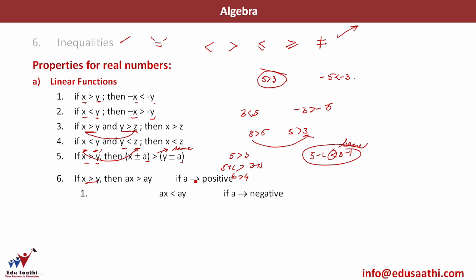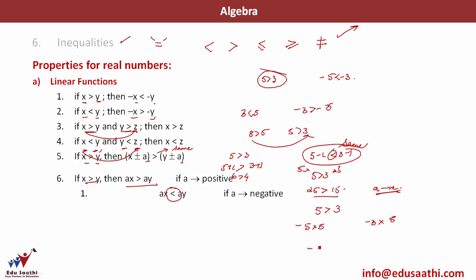If x is greater than y, then multiplying with a positive constant a on both sides, the sign of the inequality remains the same. So if 5 is greater than 3 and I multiply by 5 on both sides, I get 25 greater than 15. But if a is negative — if I am multiplying with a negative number — the sign of the inequality changes. So 5 is greater than 3, but multiplying both sides by minus 1 gives minus 25 less than minus 15.